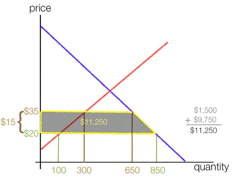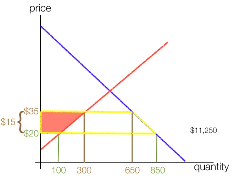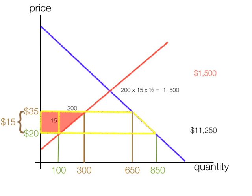Now I can calculate a few other things. The first thing I'm going to calculate is the increase in producer surplus, which is that pink trapezoid. I take the area of that little rectangle, which is 100 times 15, which is $1,500. Then I take the area of the triangle, which is 200 times 15 times one half, which is $1,500 again. So the $1,500 plus $1,500 combined is the increase in producer surplus.